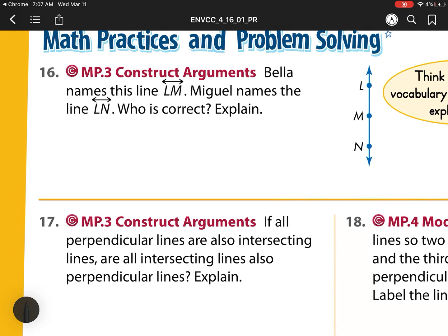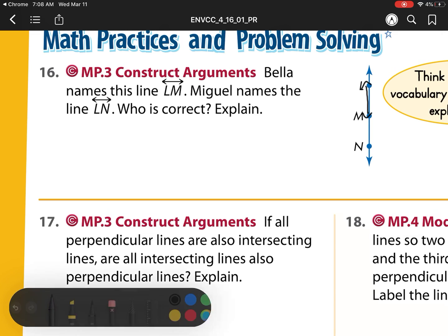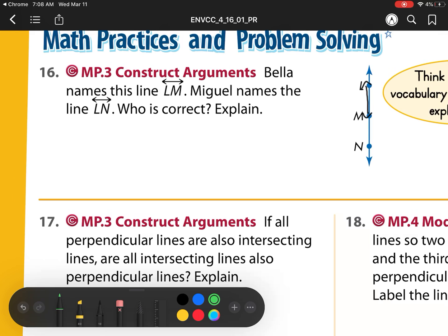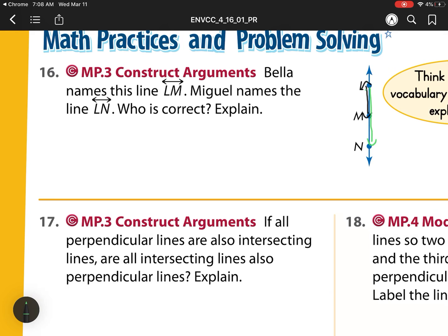Number 16, Bella names this line LM. Miguel names the line LN. Who is correct? Well, let's look over here. LM is right here. And that goes on forever. And our other person is LN, which is this line, which also goes on forever. So we notice that they're the exact same line.